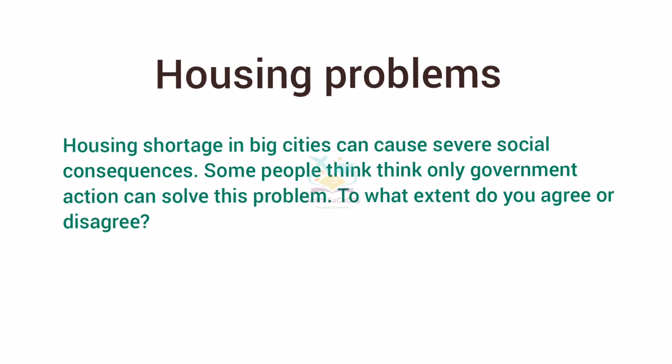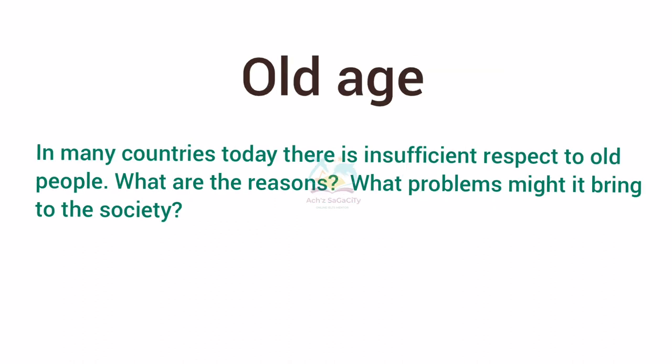Next topic is housing problems: 'Housing shortage in big cities can cause severe social consequences. Some people think only government action can solve this problem. To what extent do you agree or disagree?' This is a 'to what extent' question — along with agreeing that the government needs to take action, you can also mention what individuals or society can do to prevent this issue in another body paragraph.